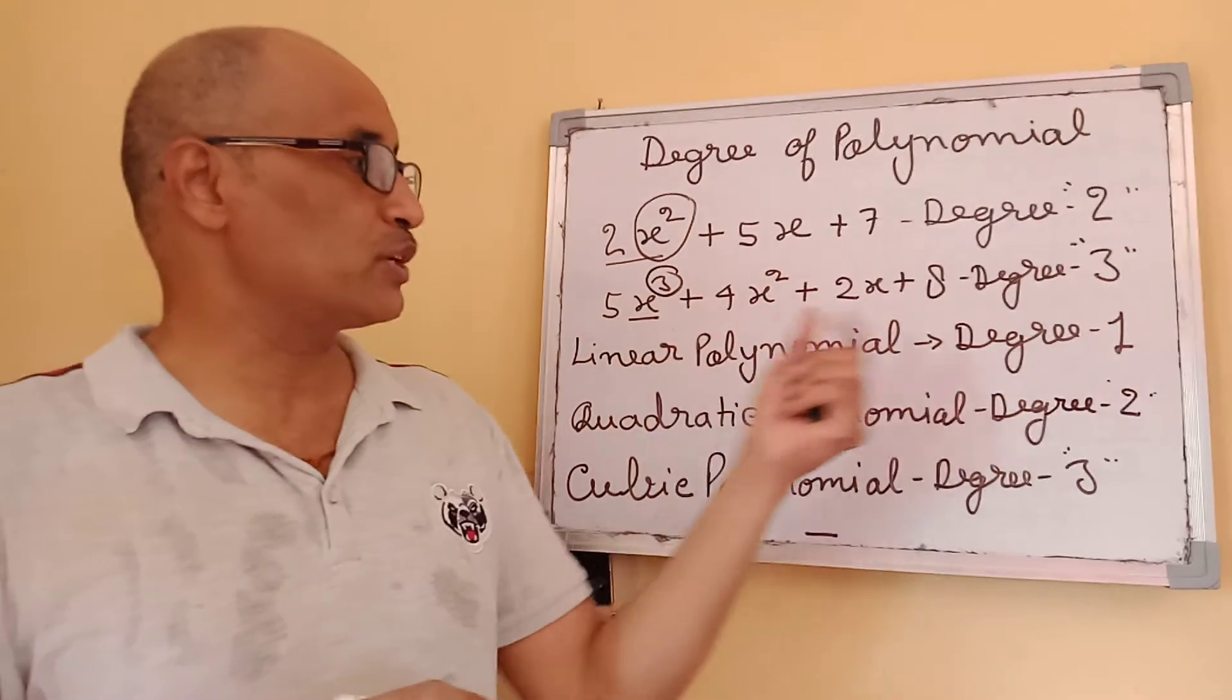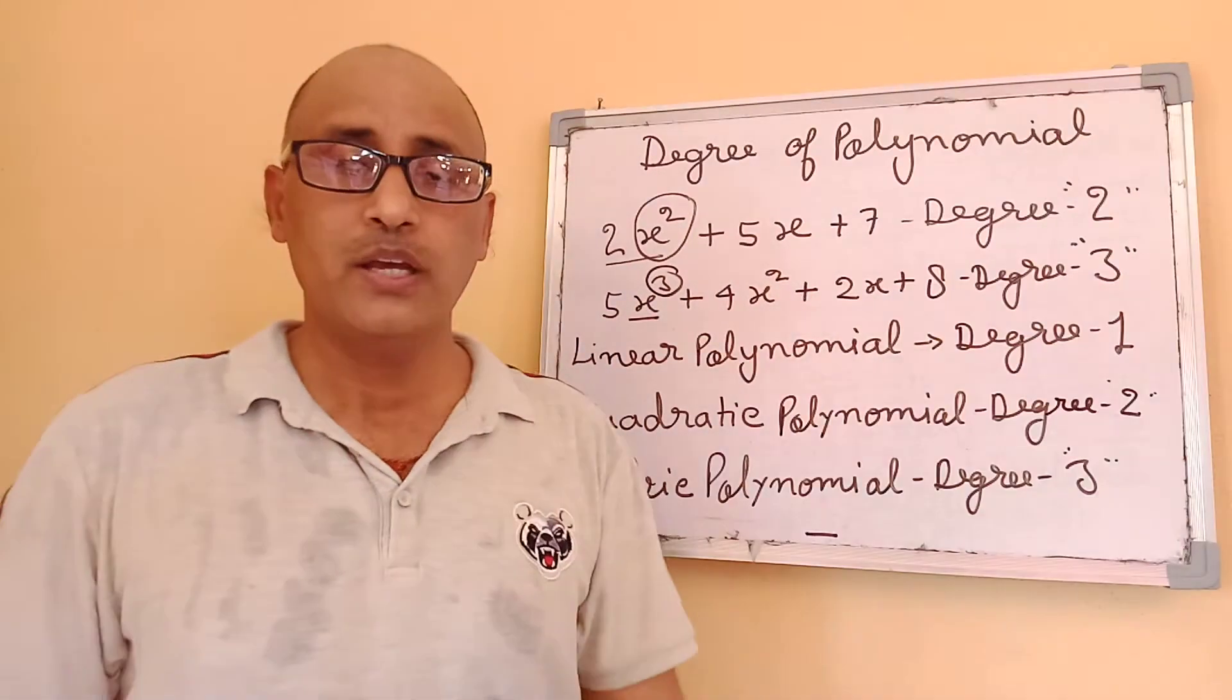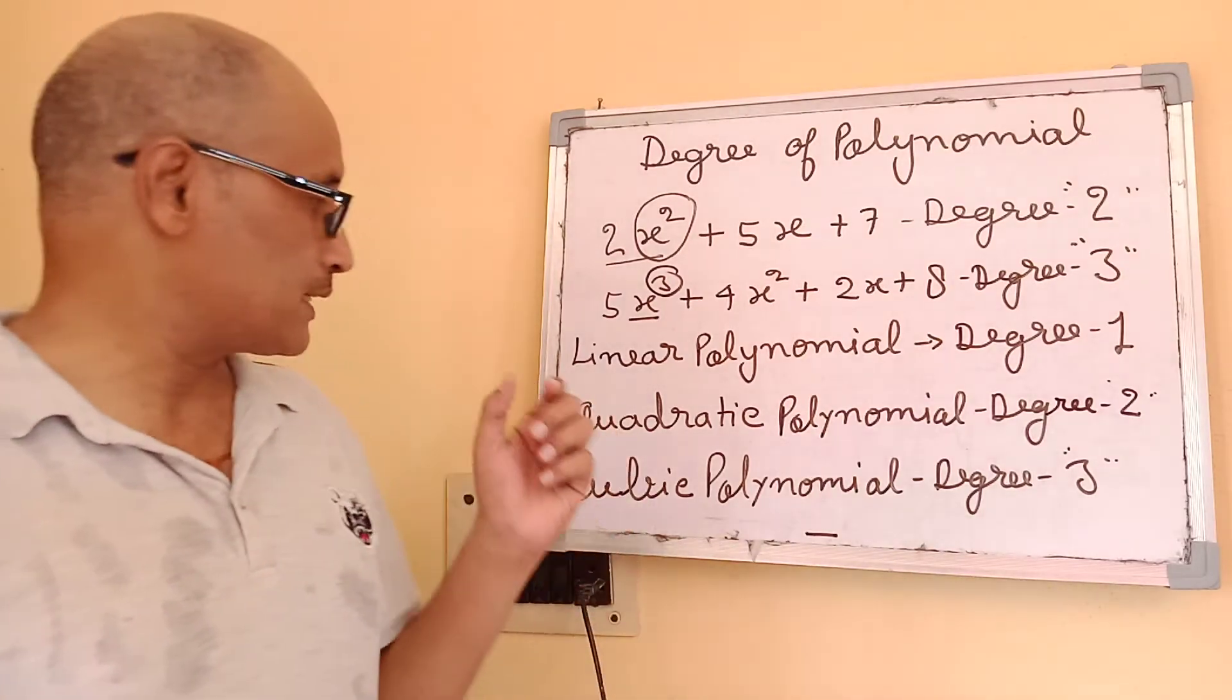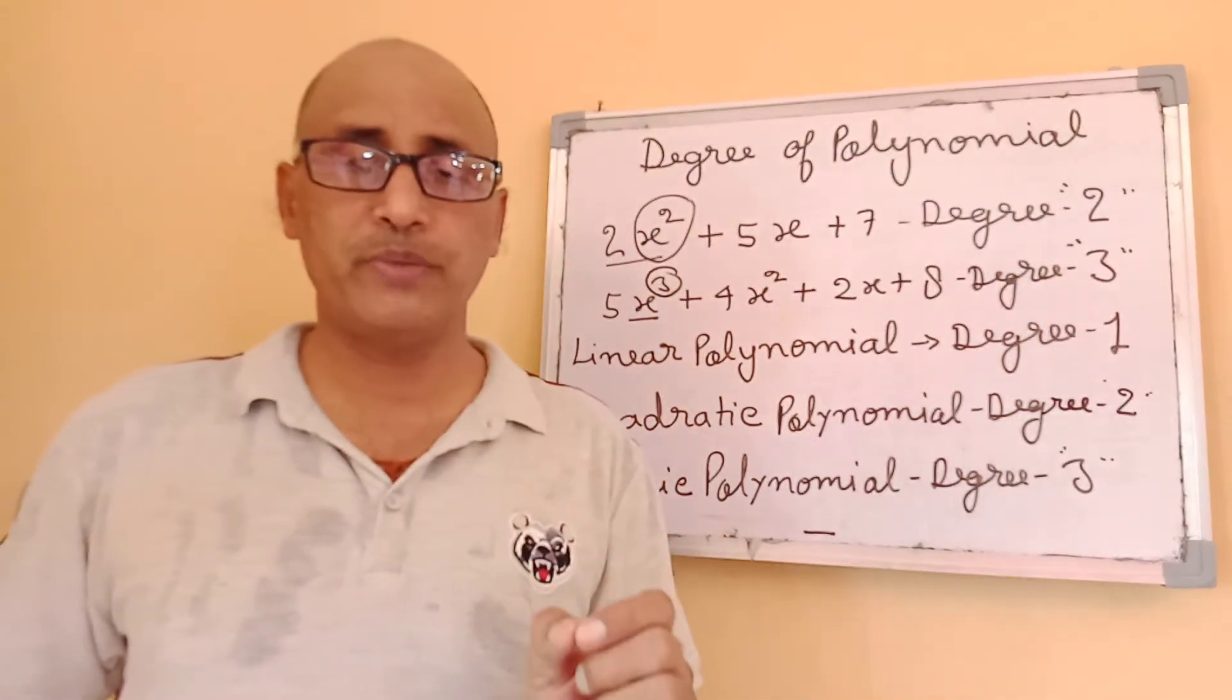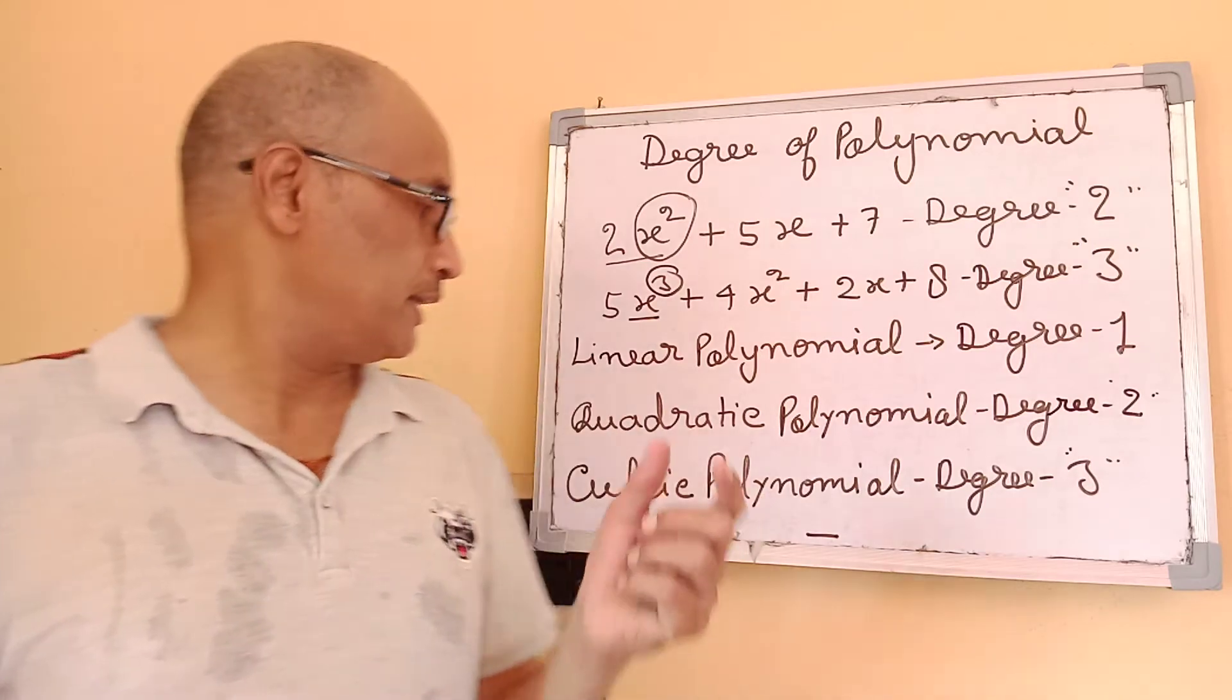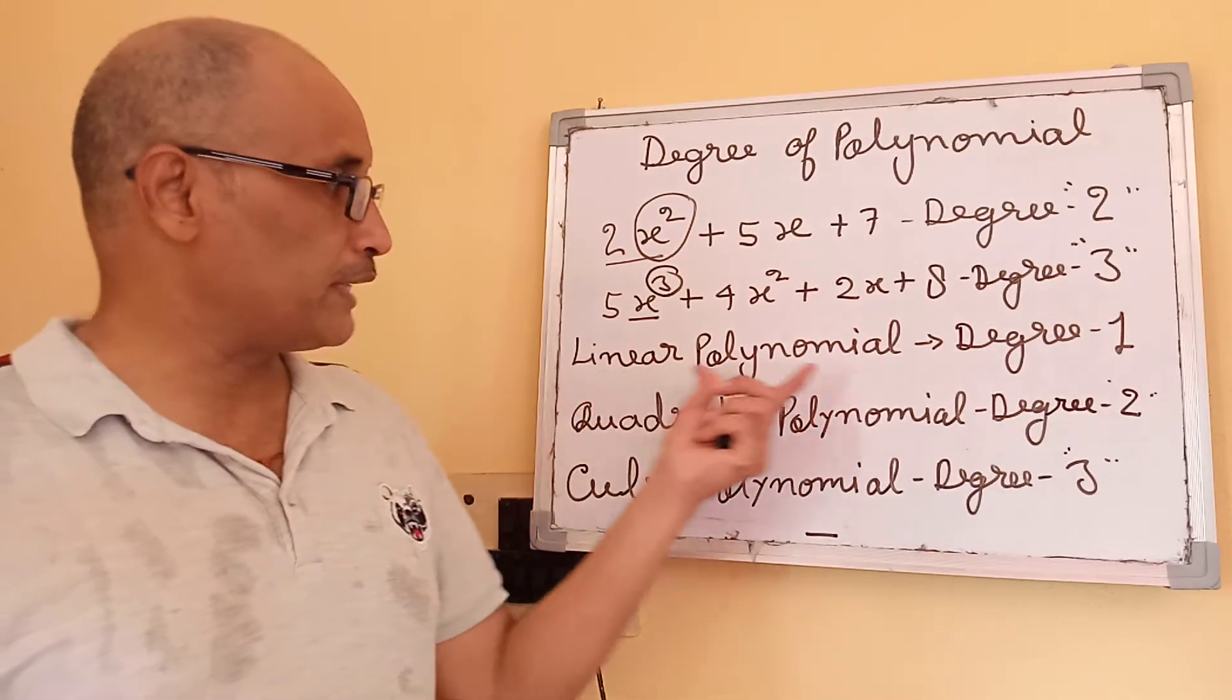So the degree of this equation is 3. You must remember that if a polynomial has degree 1, that is called a linear polynomial.